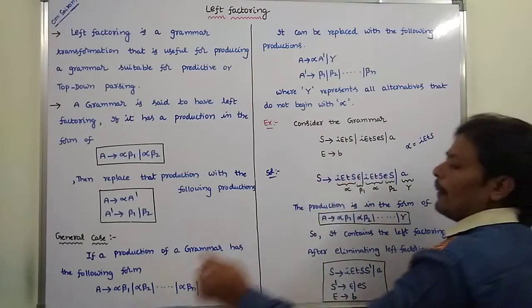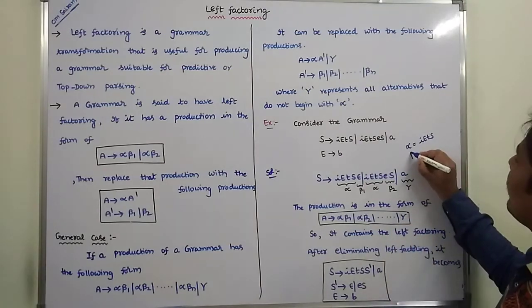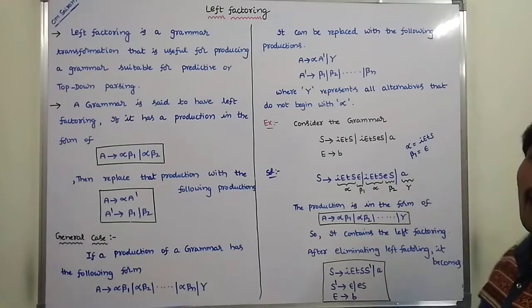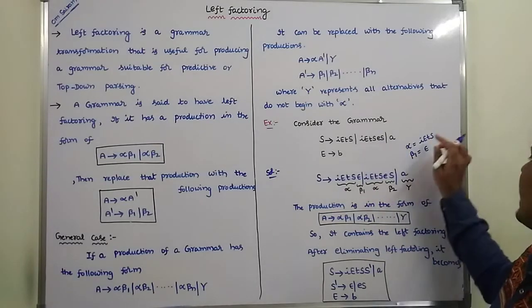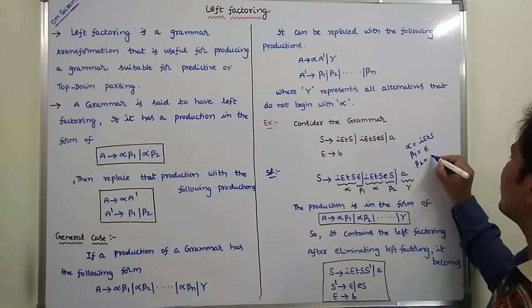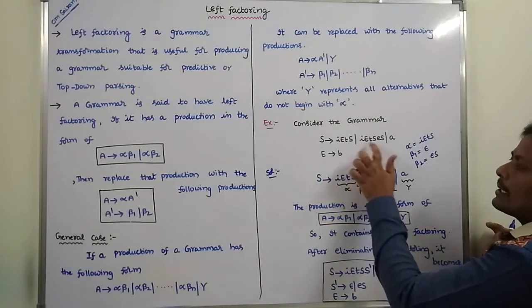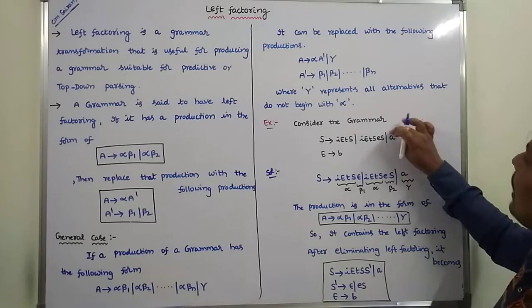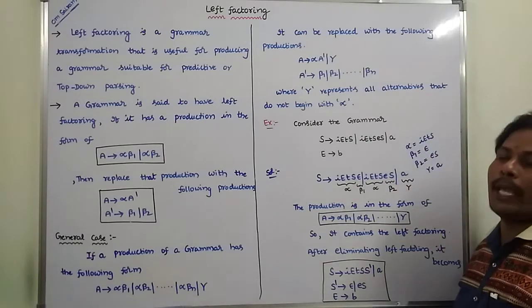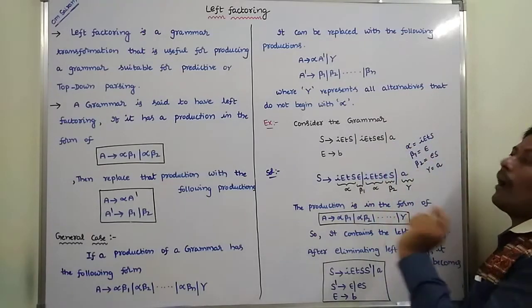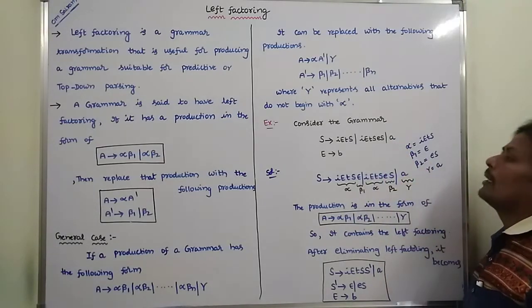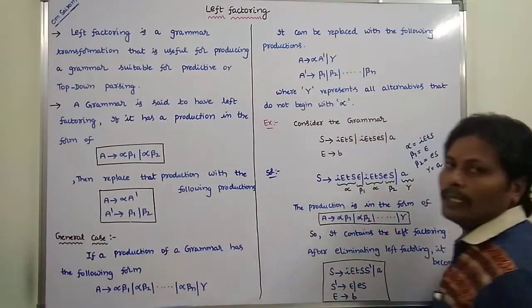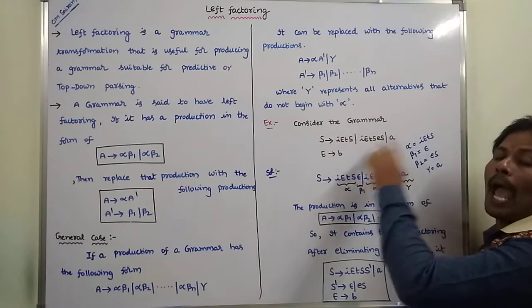Here, iEt is alpha but beta 1 is not there, so beta 1 is equal to epsilon — because epsilon multiplied with iEt equals iEt. Next, alpha is the same iEt and beta 2 is equal to eS. So beta 1 is epsilon and beta 2 is eS. Gamma is equal to a, because gamma represents the parts that do not start with alpha — the third part 'a' does not start with alpha, so gamma is equal to a. Hence, this production is said to have left factoring.